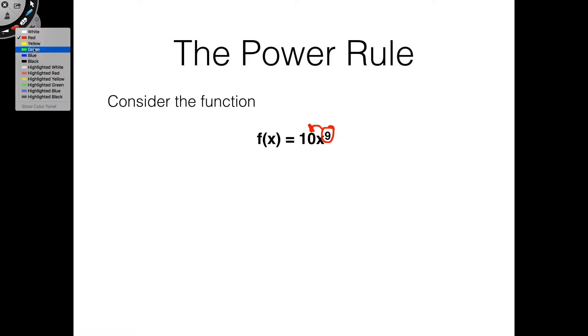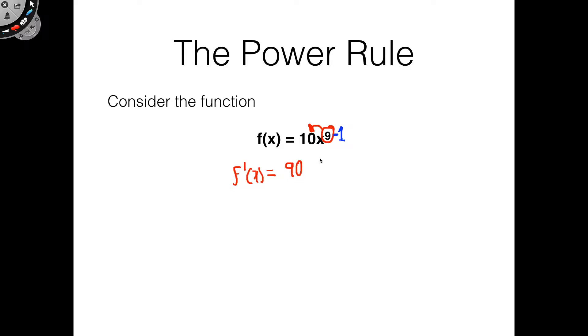Then what you do is you subtract 1 from that degree. So let's see what we get if we do that. So we get that f'(x) equals 10 times 9 is 90, x to the 9 minus 1 is 8. This would be our answer.